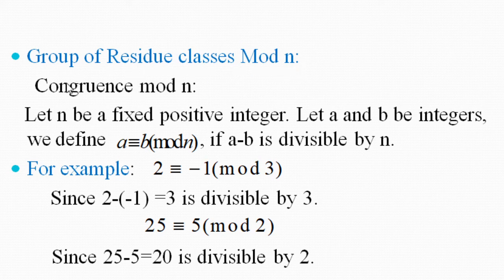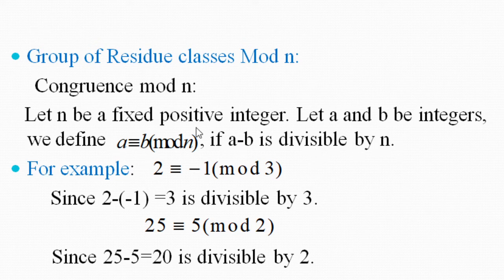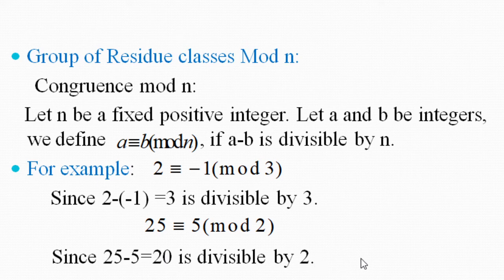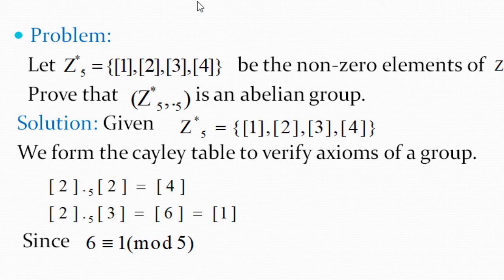Group of residue classes modulo N: Let N be a fixed positive integer and let A and B be integers. We define A congruent to B modulo N if A − B is divisible by N. For example, 2 ≡ −1 (mod 3) because 2−(−1) = 3 is divisible by 3. Also, 25 ≡ 5 (mod 2) because 25−5 = 20 is divisible by 2, leaving remainder 0.